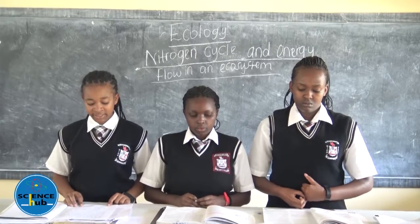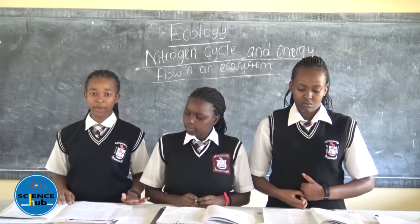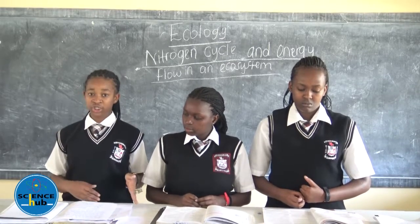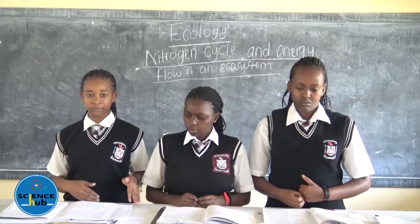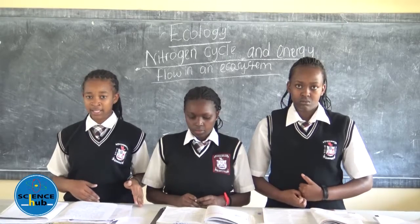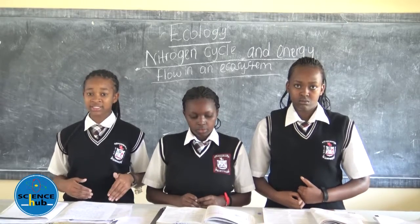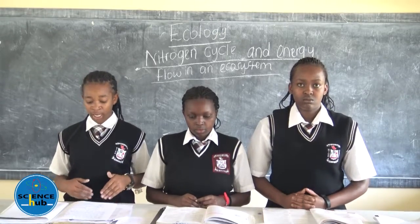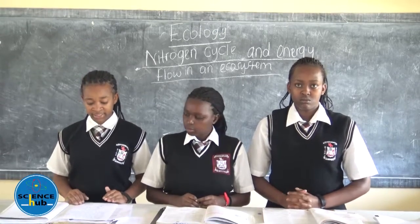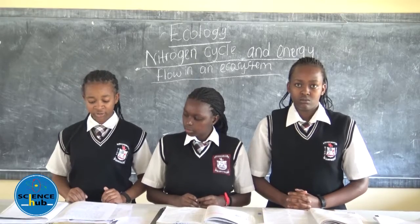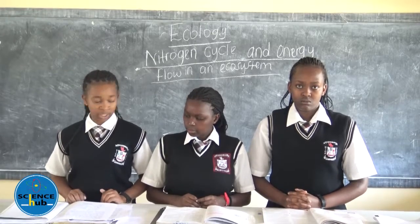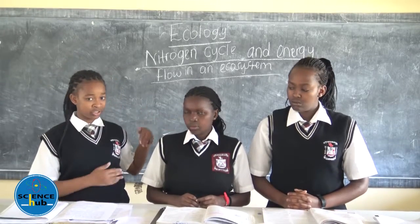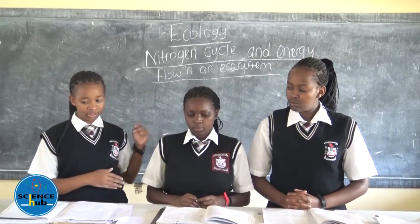There is a system whereby we are shown how nitrogen is obtained from the air and how it is accumulated by plants and animals, which is known as the nitrogen cycle. I am going to demonstrate it using a diagram on the board.